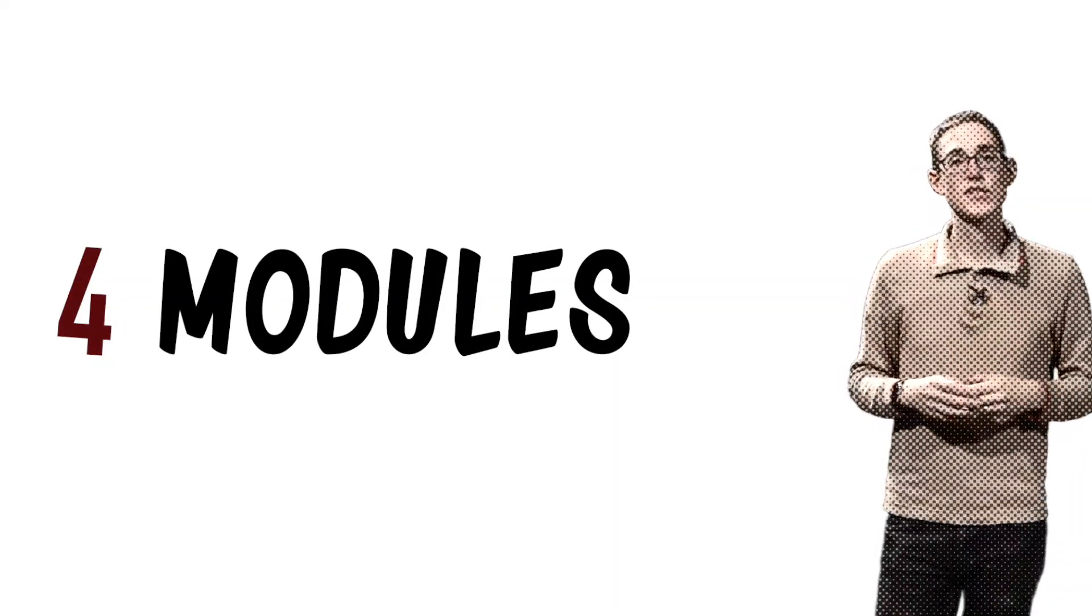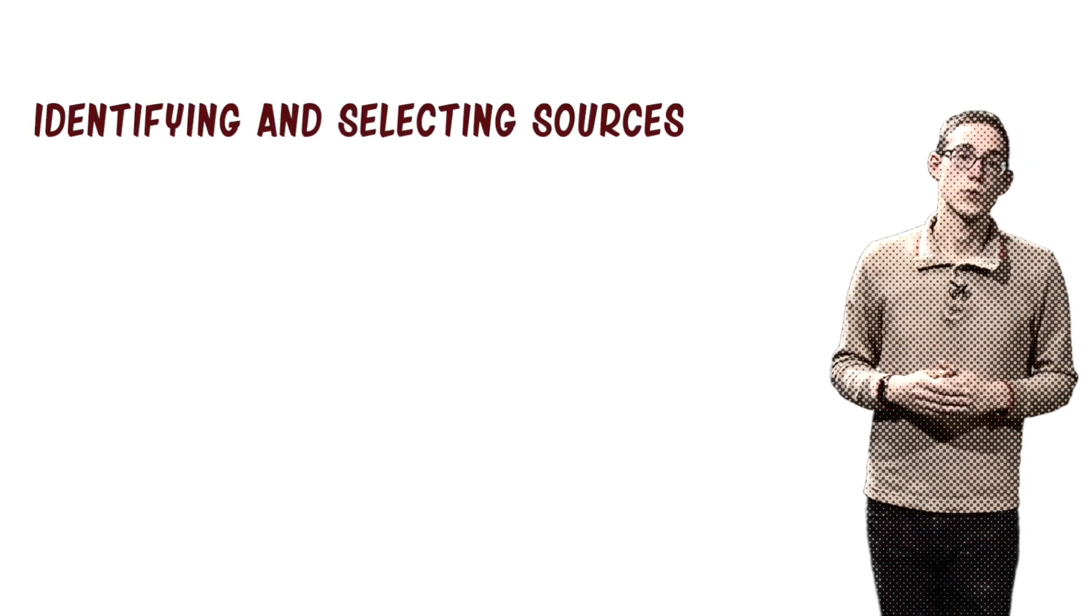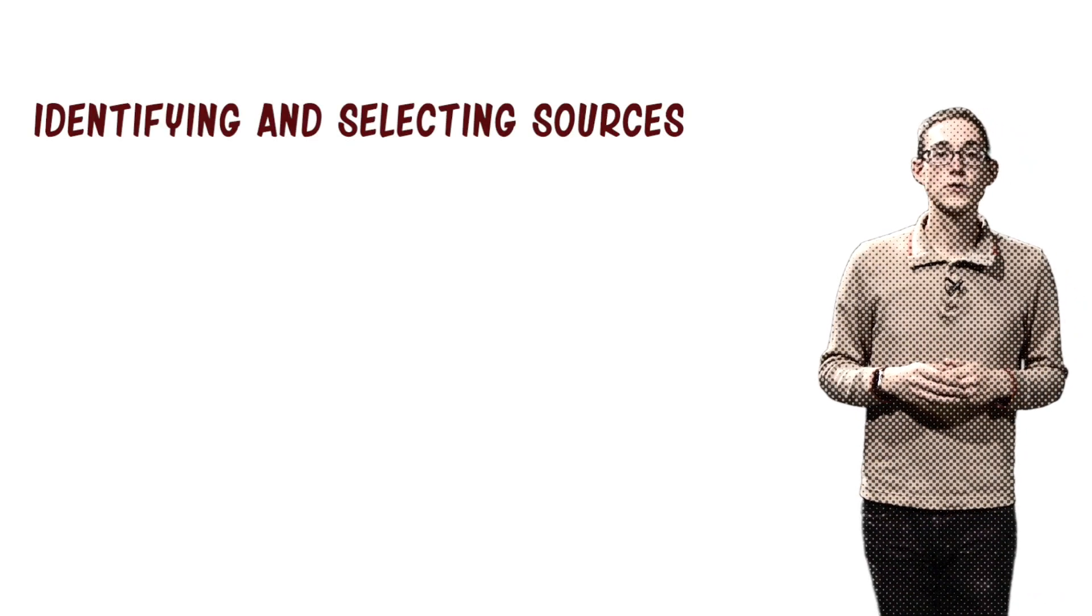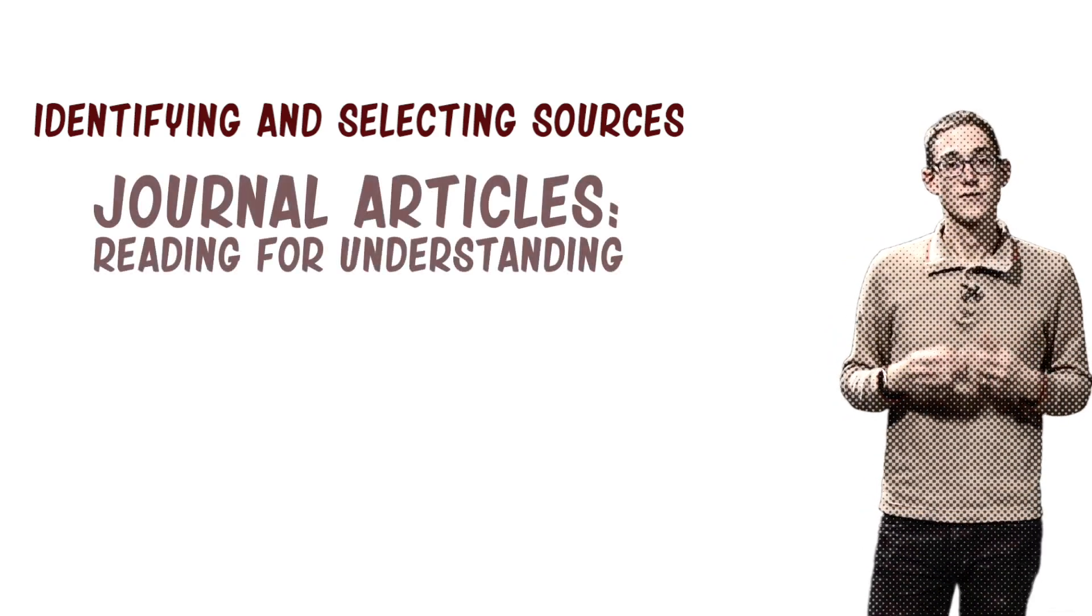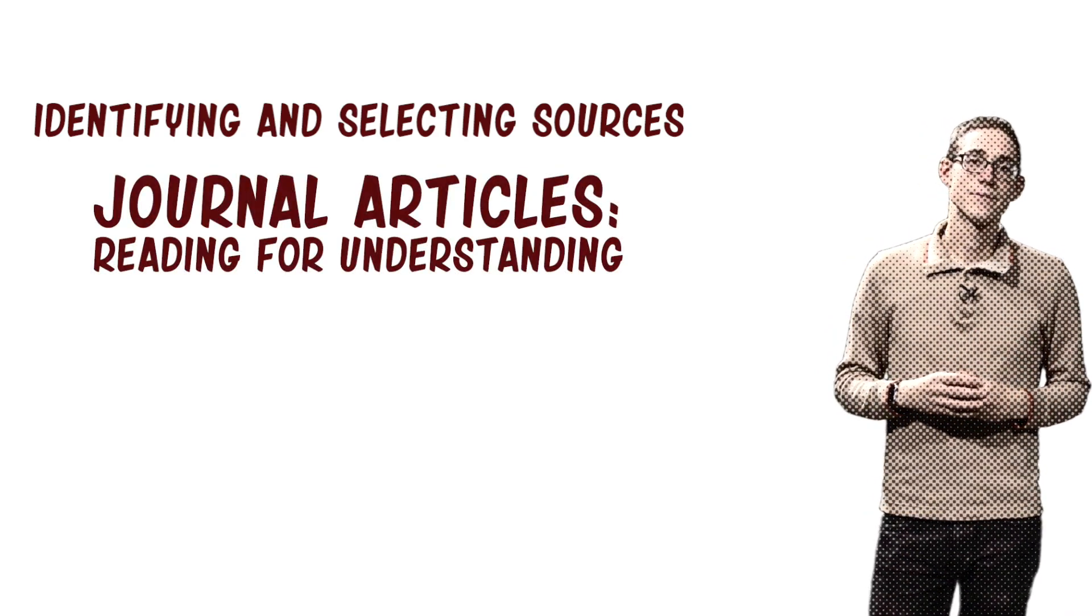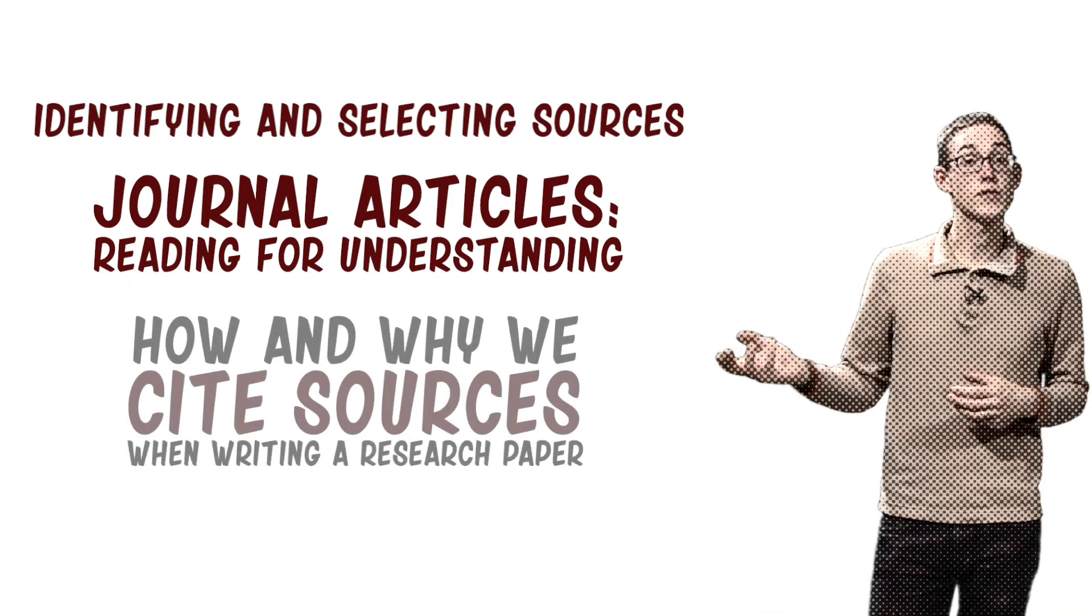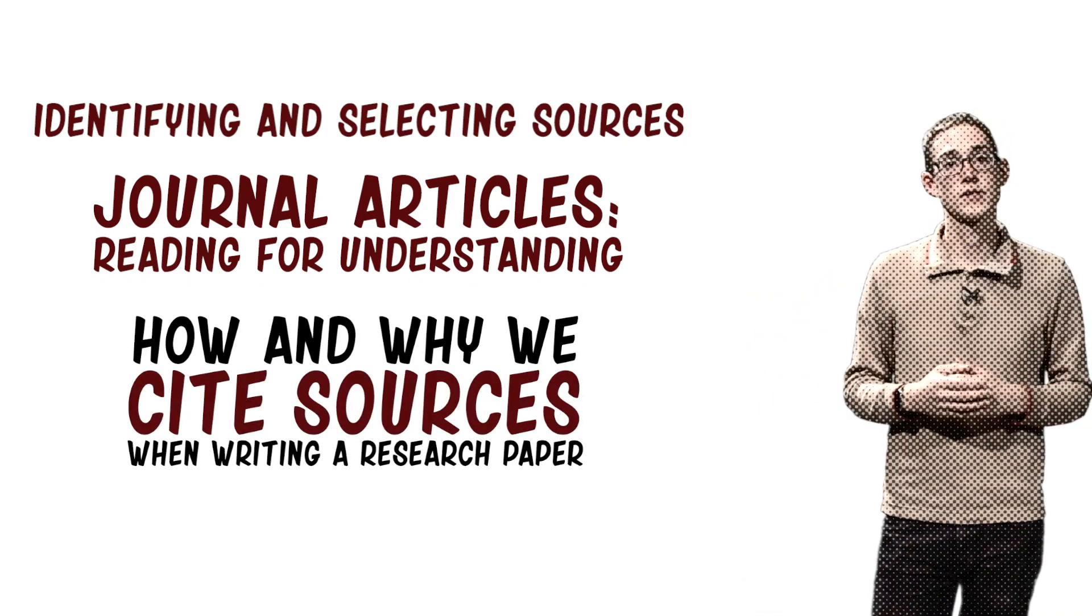This track is composed of four modules covering the types of research you're likely to experience as an undergraduate. First, we'll talk about how to find scholarly sources. Then we'll talk about how to read those sources effectively and efficiently. Then we'll talk about how to use those sources in a paper. We'll talk about citations and appropriate uses.